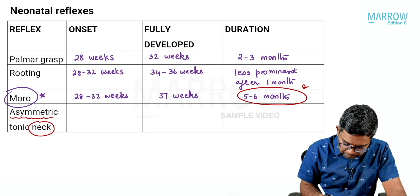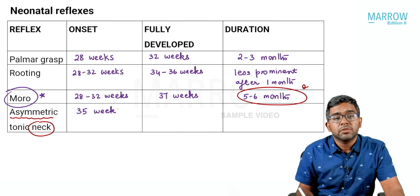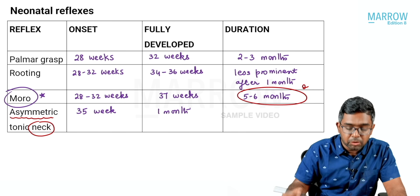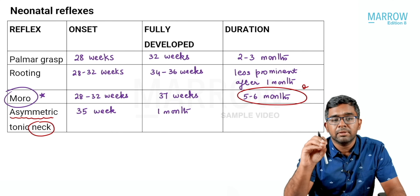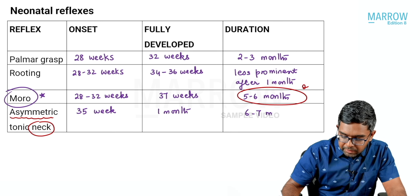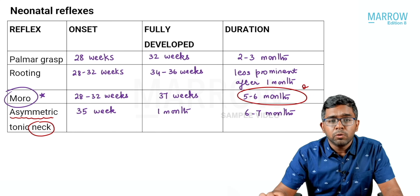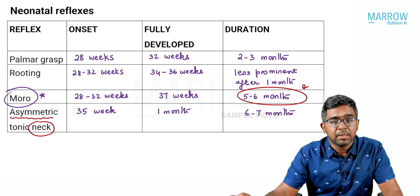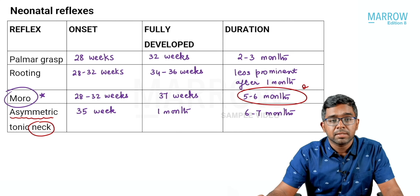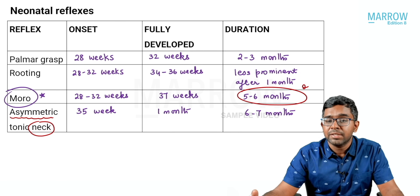Regarding the properties of the asymmetric tonic neck reflex: it appears by 35 weeks of gestation and is fully developed one month after birth. The total duration is six to seven months after birth, according to Nelson's textbook. The OPGate textbook gives three to four months, but we will go according to Nelson — so if asked about the duration of the asymmetric tonic neck reflex, the answer is six to seven months after birth.